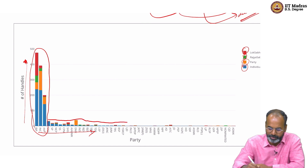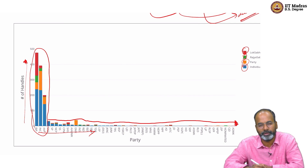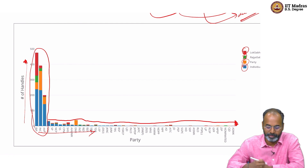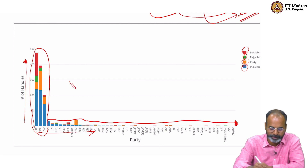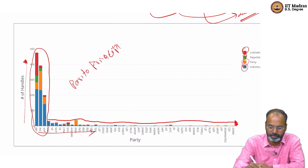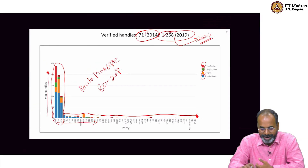Lots of political parties have a small number of handles, while a small number of parties have a large number of handles — the Pareto or 80-20 principle. That gives you a sense of the handles we had. I am going through these things so you understand the kind of analysis you can do with collected data.